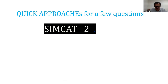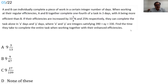Let's begin with the first question I've selected — question number five. This is a question on time and work. If we go by theory, it would be quite lengthy to solve — too many variables. So let's do this by trial and error, a practical approach.